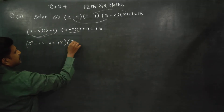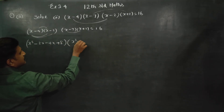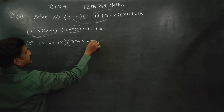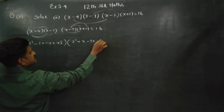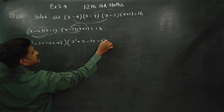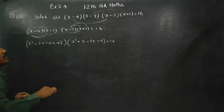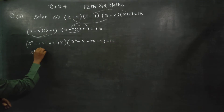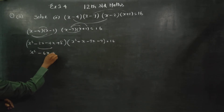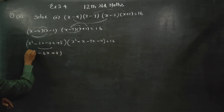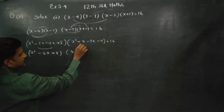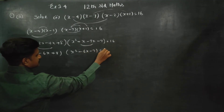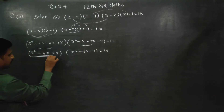This is x squared plus x. This is minus 7x minus 7 is equal to 16. Then, this is the pair: x squared minus 6x plus 8. Then, this is x squared minus 6x minus 7 is equal to 16. This is the two terms.